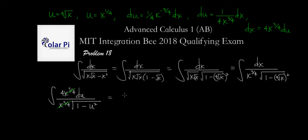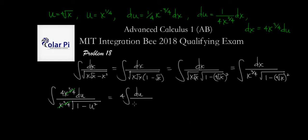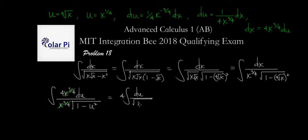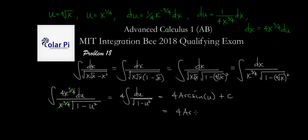So next we have four times the integral of du divided by the square root of one minus u squared. We know how to do this anti-derivative — that's arc sine of u, and that's why our choice of u is good. So the result is four times arc sine of u plus C. But we said u was the fourth root of x, so the final answer is four times arc sine of the fourth root of x, plus C.